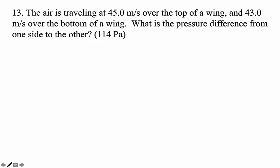All right. Air is traveling 45 meters per second over the top of the wing and 43 meters per second over the bottom of the wing. What is the pressure difference from one side to the other?